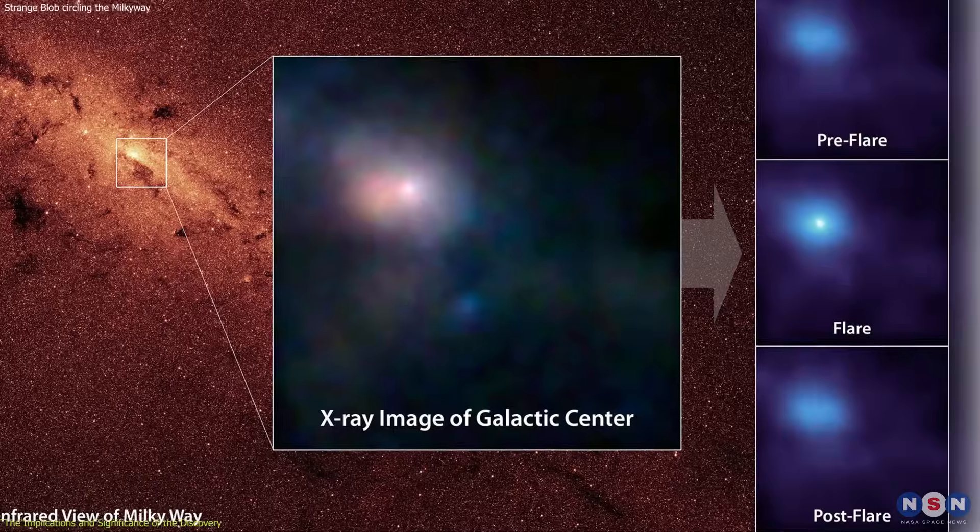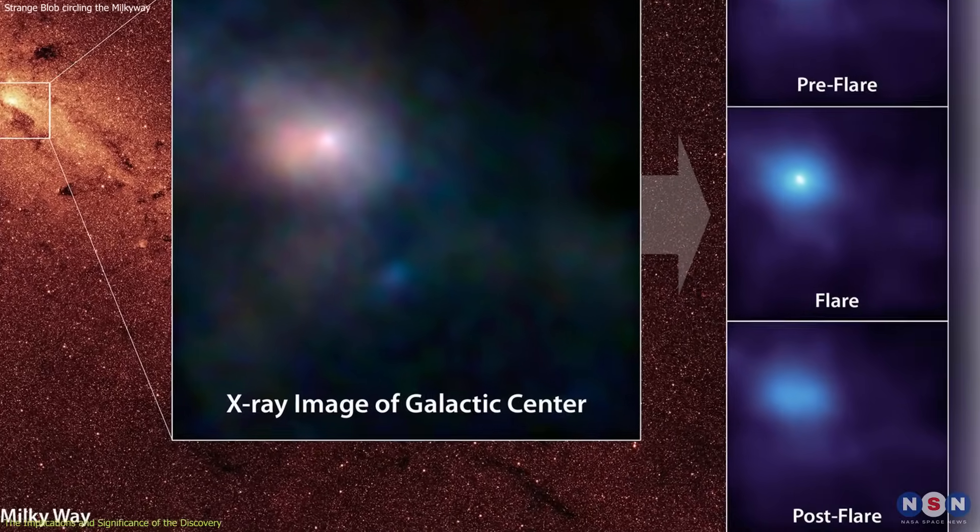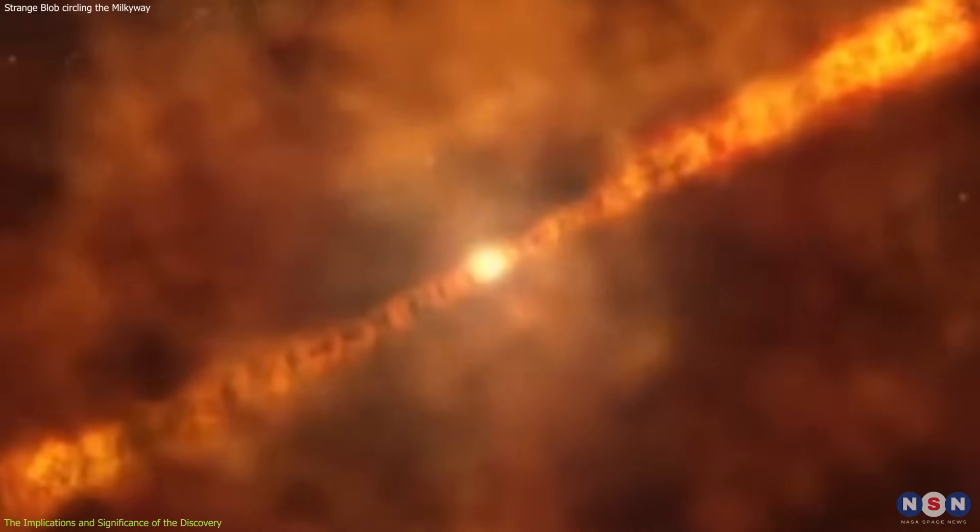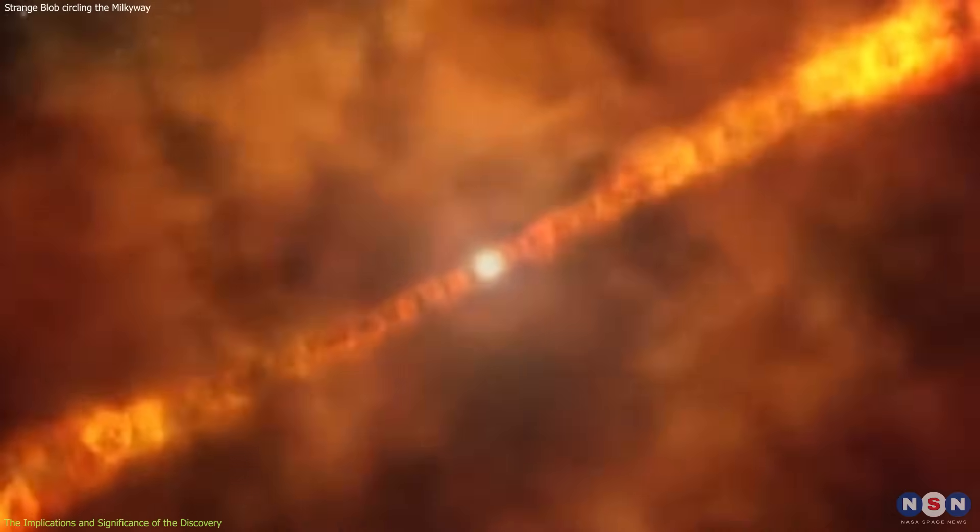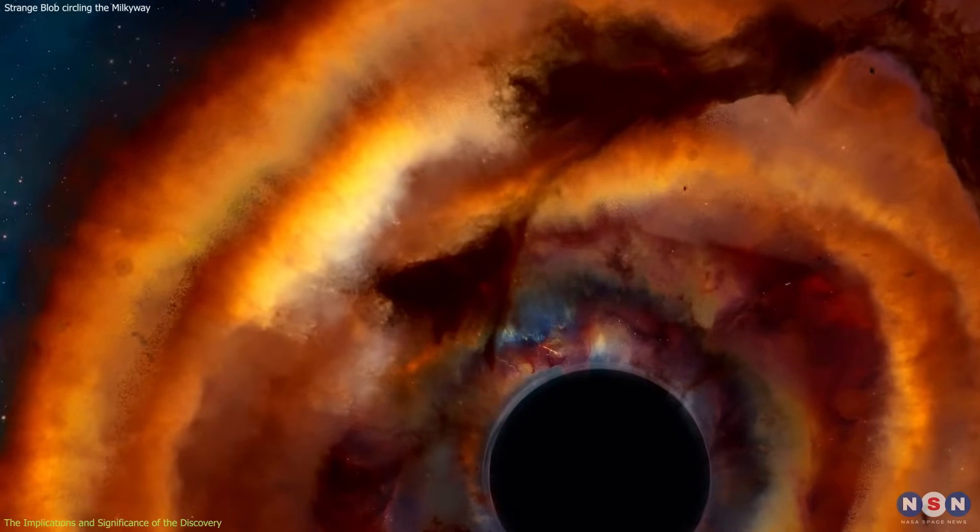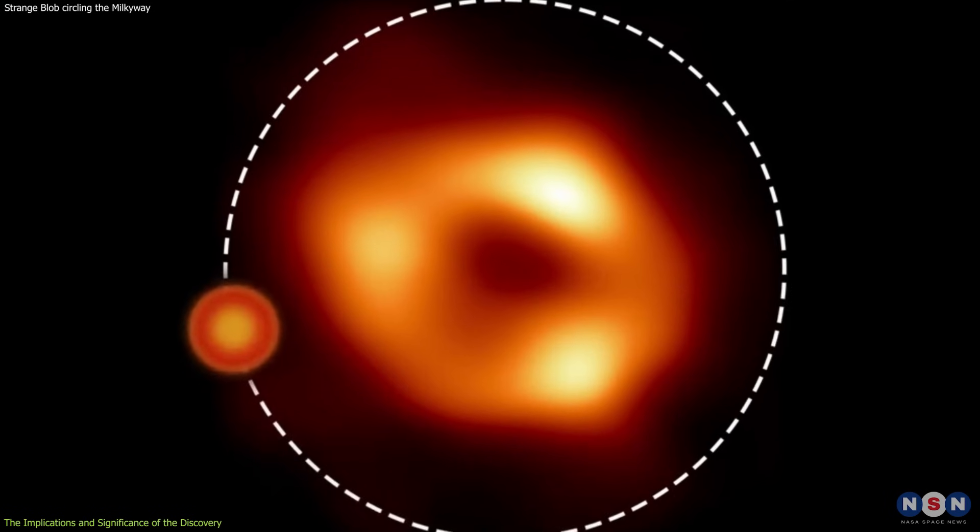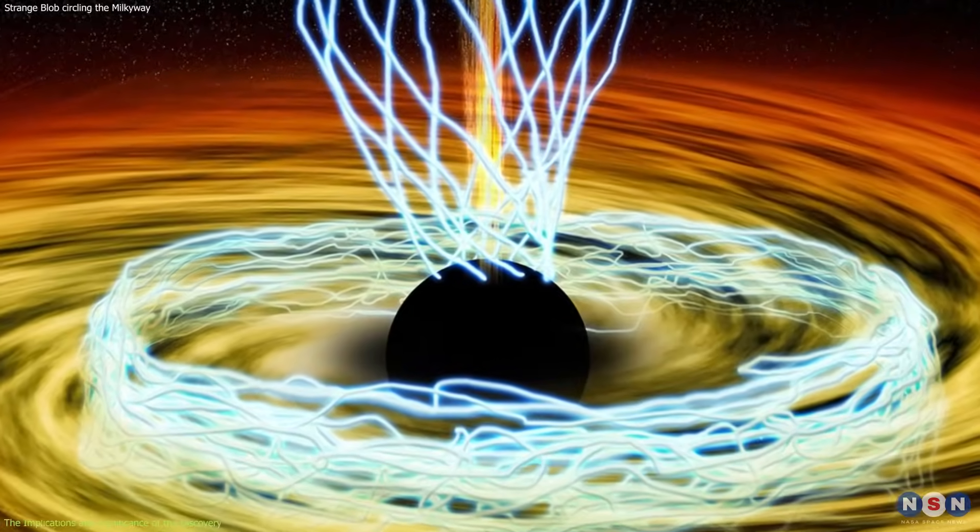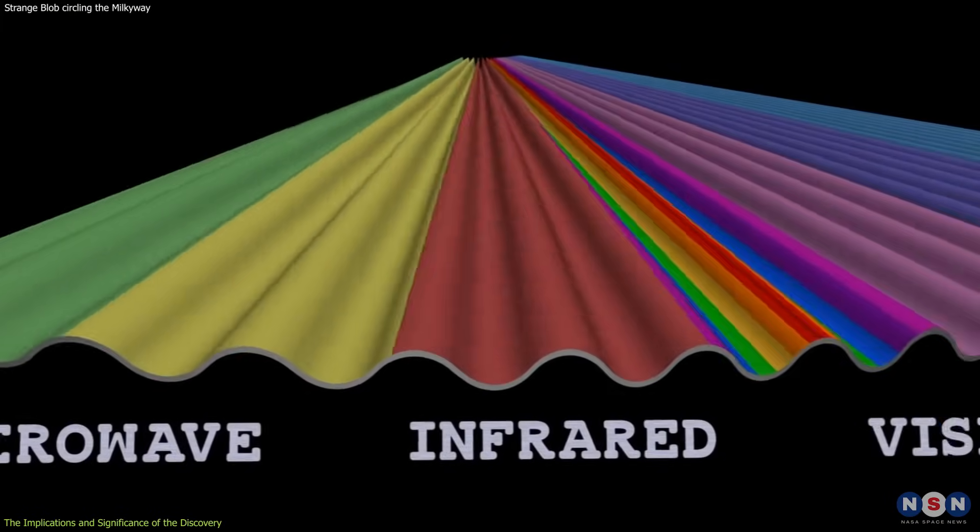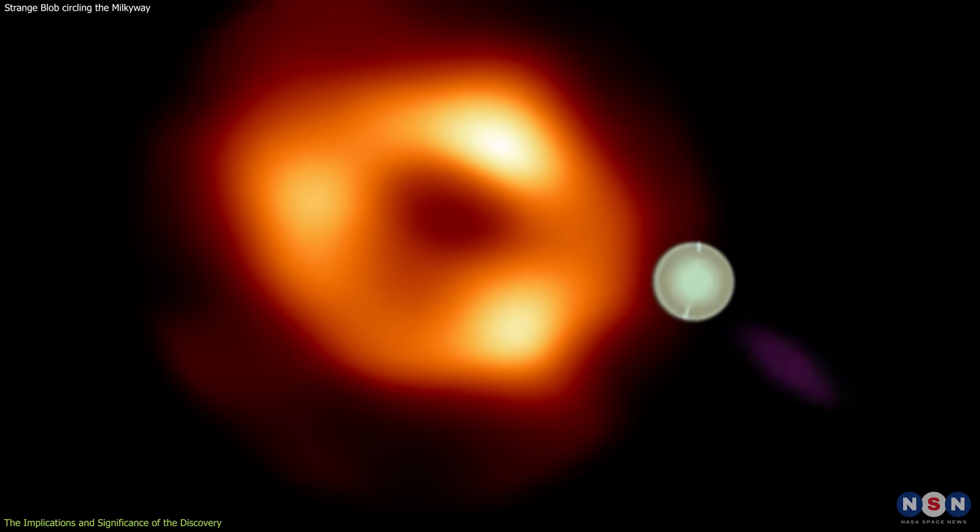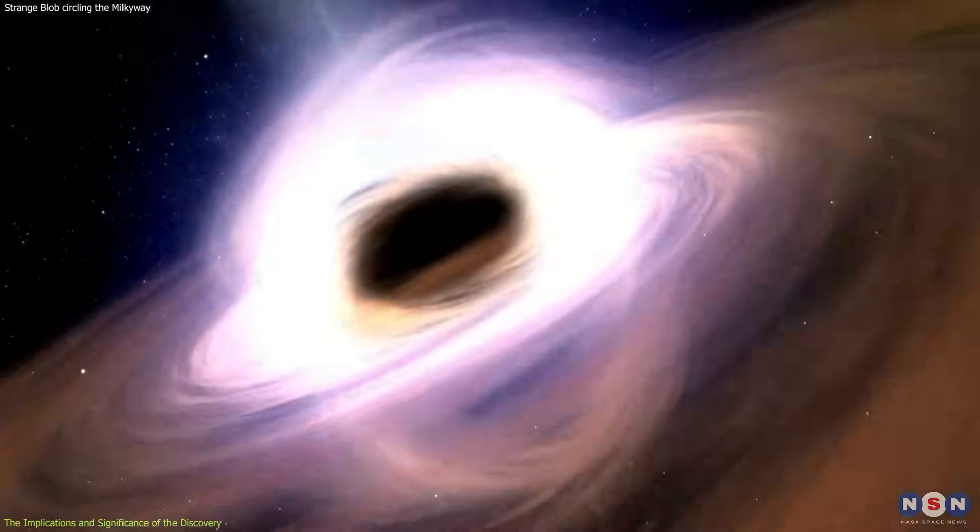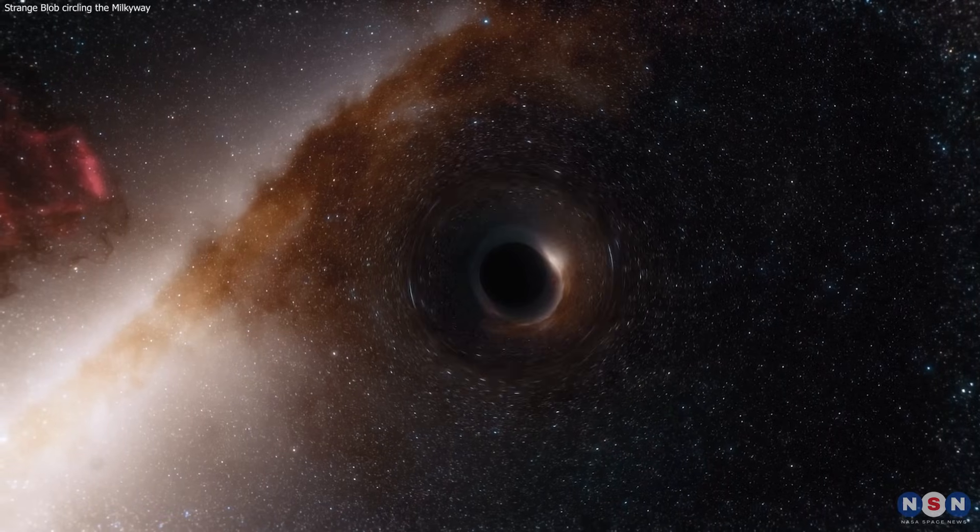However, this discovery also raises many questions and uncertainties that need further investigation and confirmation. For example, how common and frequent are these blobs of gas, and how do they vary in size, shape, temperature, and composition? How exactly do they form, and what triggers the magnetic field to break and release them? How do they emit radiation in different wavelengths, and what are the mechanisms and processes that produce the gamma rays? How do they affect the accretion disk and the black hole, and how do they respond to the black hole's gravity and rotation?